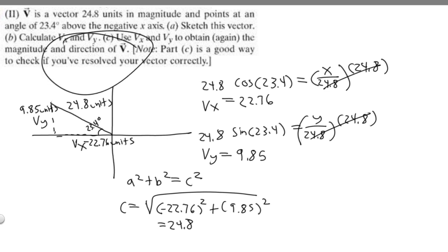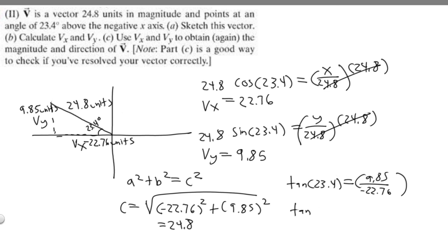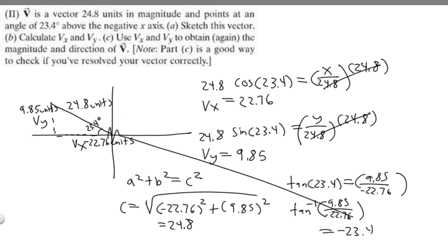Now we need to check the direction by taking the arctangent of our y component over our x component. The tangent of 23.4 equals opposite over adjacent, so that's 9.85 over negative 22.76. Taking the arctangent of 9.85 over negative 22.76, we should get 23.4 or negative 23.4. Checking right here, it is 23.4, so it does check out.